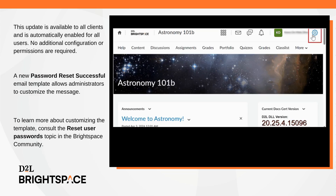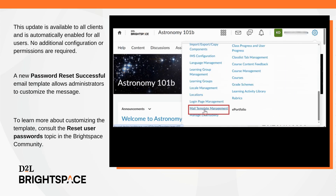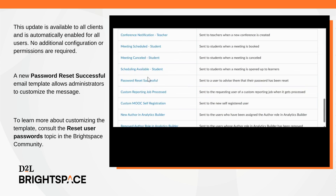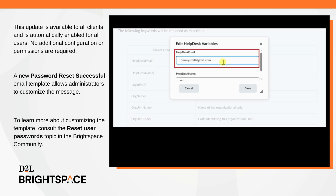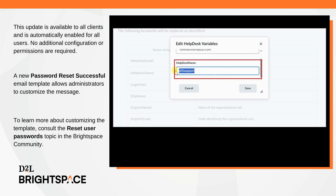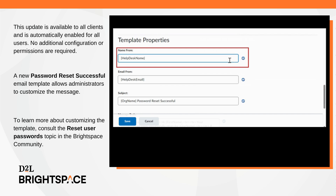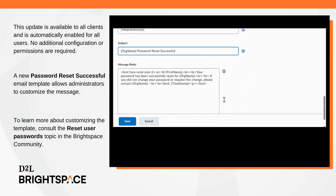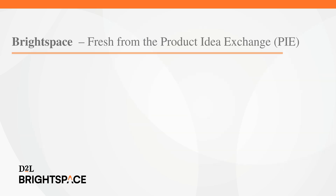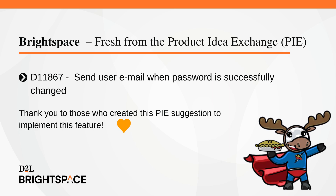The new password reset successful email template allows administrators to customize the message. D2L recommends adjusting the template to guide users on who to contact if the reset is unexpected, providing further security and clarity. To learn more about customizing the template, consult the Reset User Passwords topic in Brightspace Community. This feature implements the following PIE item: D11867, Send user email when password is successfully changed. Thank you to those who created this PIE suggestion to implement this feature.